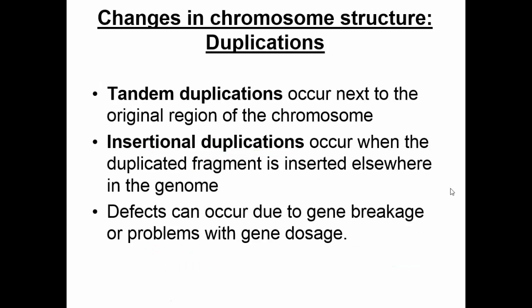There are different types of duplications. There are tandem duplications, where the repeat is inserted right next to the original sequence in the chromosome. There are also insertional duplications, which occur when the duplicated fragment is inserted elsewhere in the genome, not right next to the original fragment. Additionally, duplications can cause extra problems: if the duplicated region is inserted within a different gene, it literally disrupts that other gene, and you could have major problems where that gene is not expressed properly or not expressed at all.